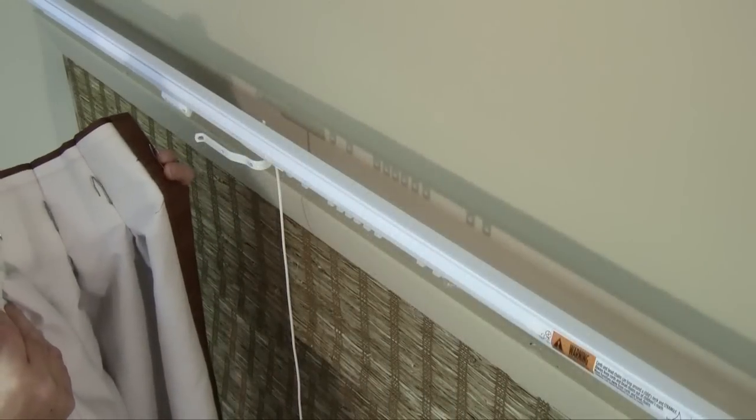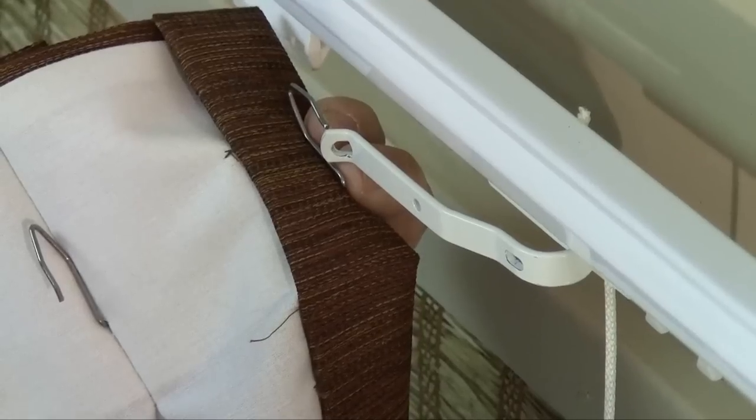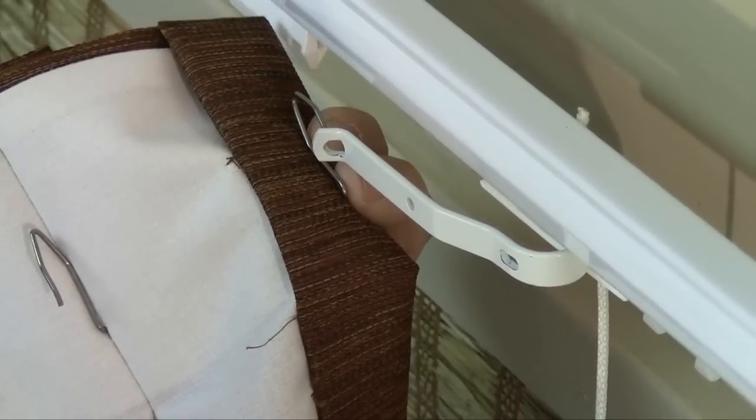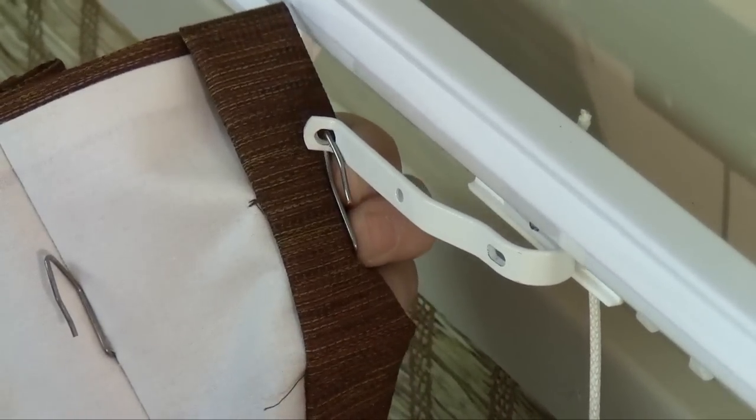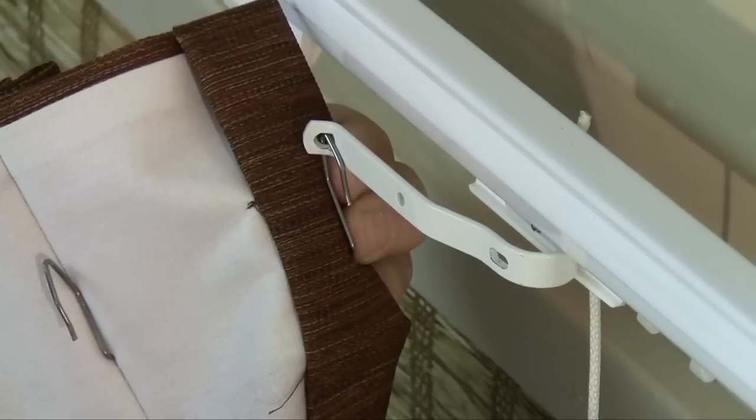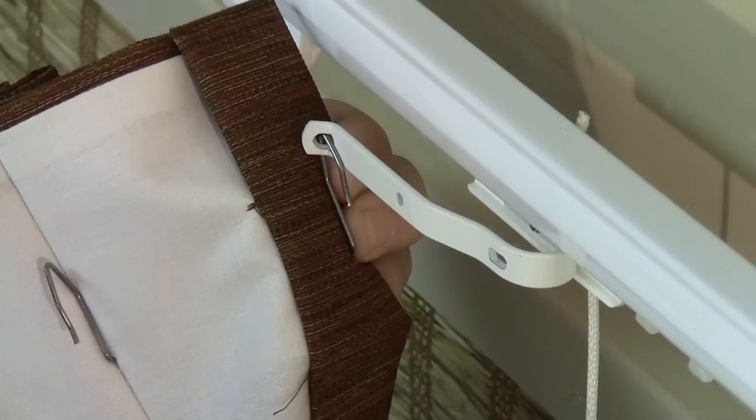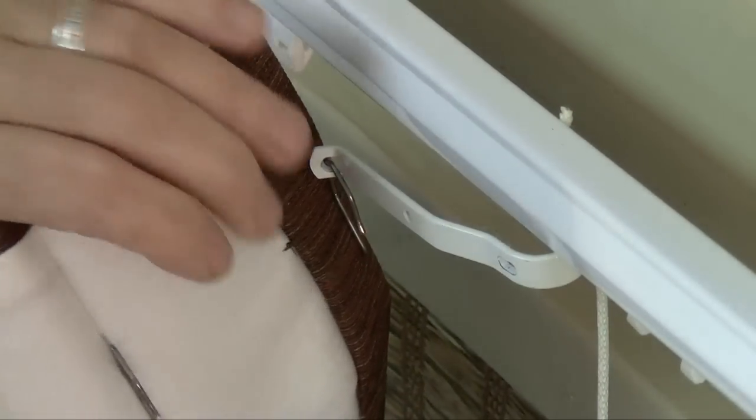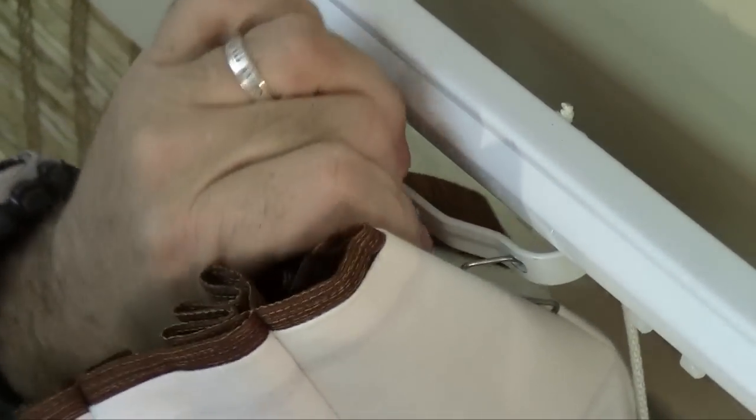Hang the drapery on the traverse rod by inserting the drapery pin on the left side of the right panel into the first hole of the overlap master carrier. Insert the pin from behind, like this. The second pin goes into the third hole of the master carrier. Then insert each successive pin into the slides on the rod.